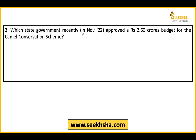Third question is a factual question from around 2023. Generally, agriculture current affairs should be studied for at least one year prior to the exam. The question asks: Which state government recently approved a 2.60 crore budget for the Camel Conservation Scheme? This is useful for IBPS 2023.